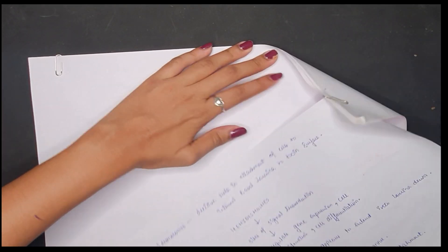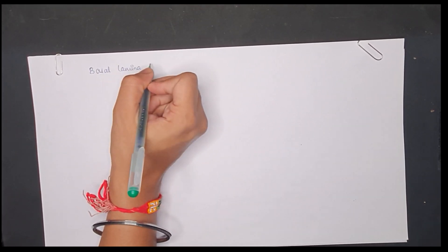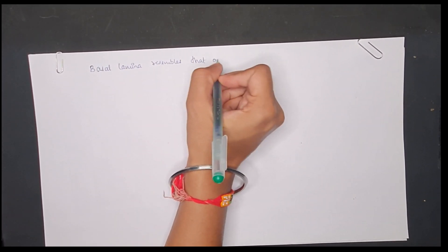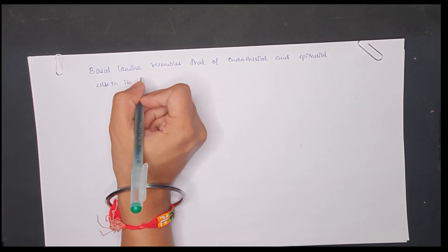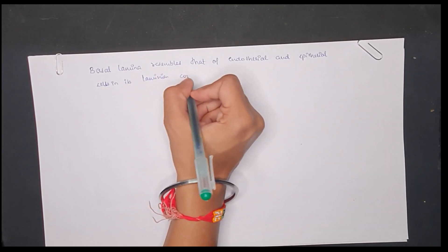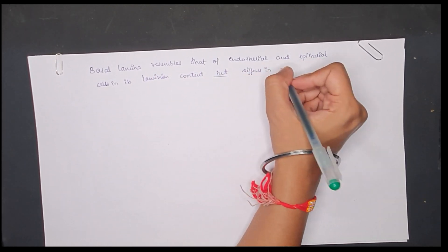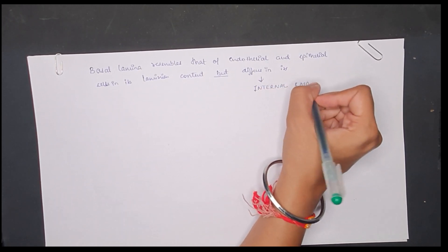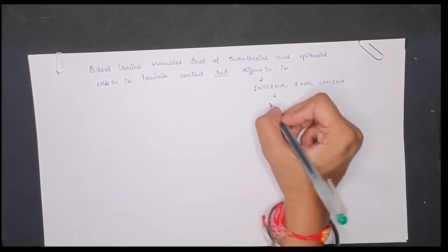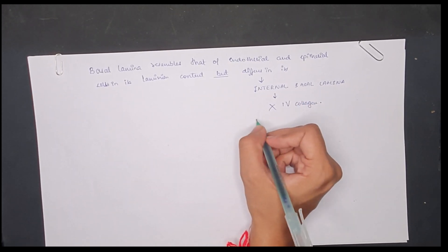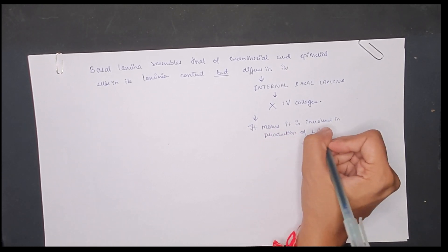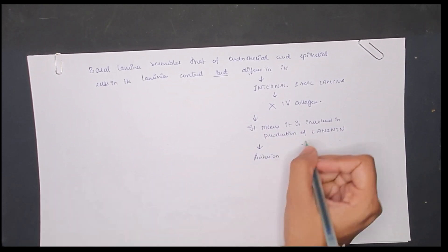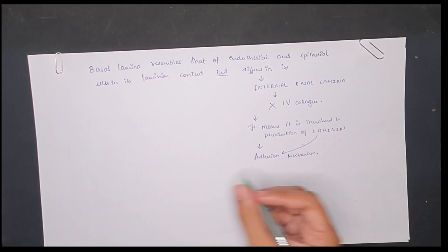Going further, the basal lamina of the junctional epithelium resembles that of endothelial and epithelial cells in laminin content, but it differs in its internal basal lamina which does not have type IV collagen, which means it is involved in the production of laminin, and these in turn help in the adhesion mechanism of junctional epithelium to the tooth structure. So laminin is a very important part for adhesion of the mechanism and this should be understood well.